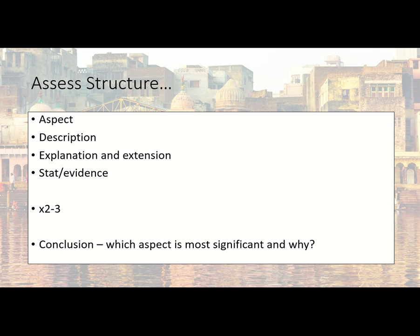Once you've described the change — for example, that India's young dependent population has reduced proportionally, meaning fewer people are under the age of 16 — you then need to explain the reason. For instance: 'This is because of better primary healthcare, which means...' Develop that explanation, and then include stats, percentages, and numbers as evidence to back up what you're saying. That is one paragraph.